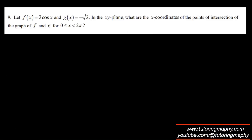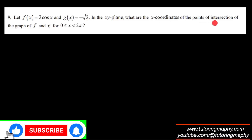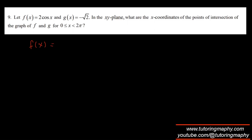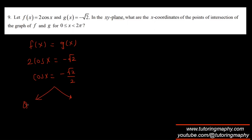Now finding x-coordinates of intersection points of f and g on [0, 2π]. They intersect when f(x) = g(x), so 2cos(x) = −√2, which gives cos(x) = −√2/2. Cosine is negative in quadrant 2 and quadrant 3. The reference angle for √2/2 is π/4. Quadrant 2: π − π/4 = 3π/4; quadrant 3: π + π/4 = 5π/4.